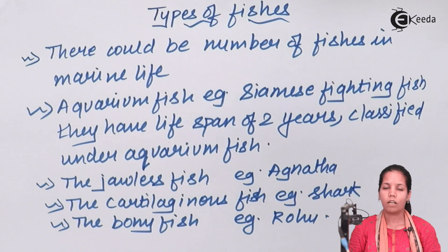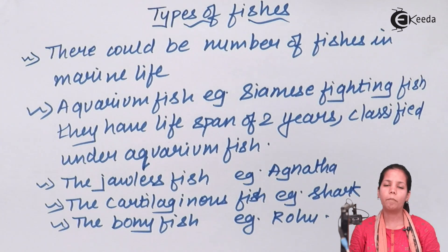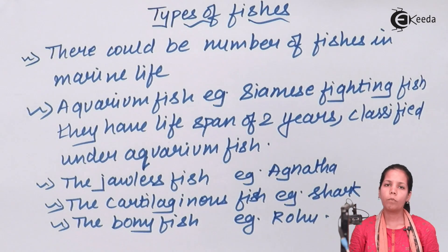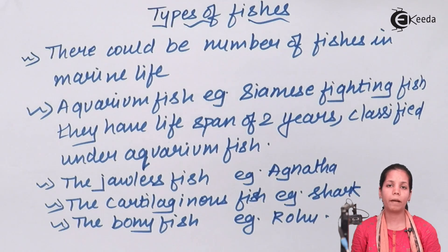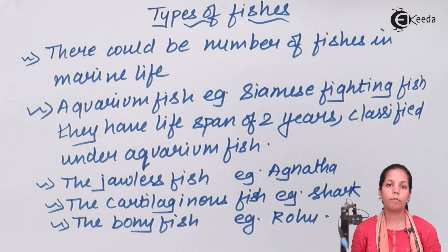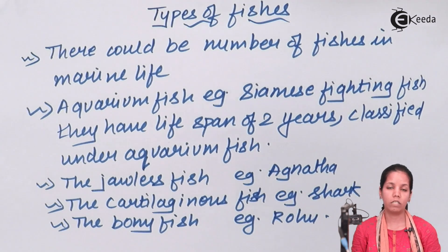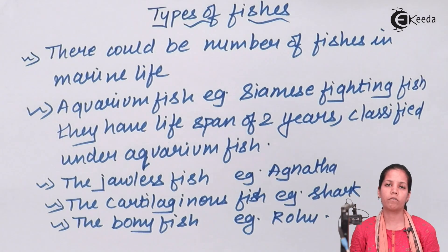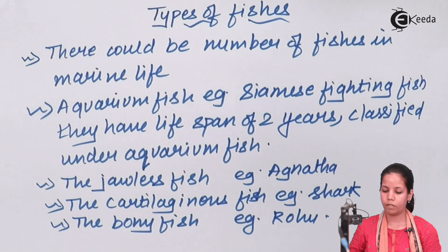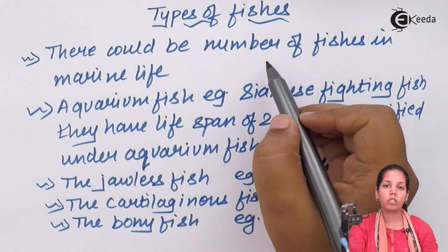Depending upon the structure of fishes, there is a lot of variety — small fishes, big fishes, some that have a lot of thorns, and ones with bigger gills. Fishes present in freshwater are comparatively smaller in size compared to sea fishes. The respiration process is very different in both, the body mass is quite different, and the variety in freshwater fish is very less compared to sea fishes.